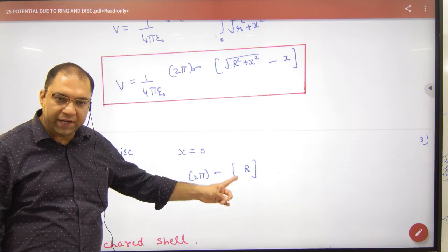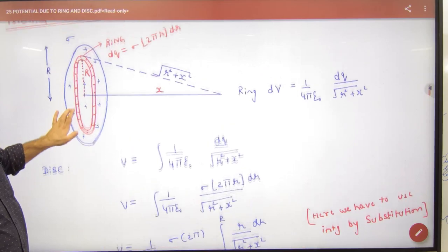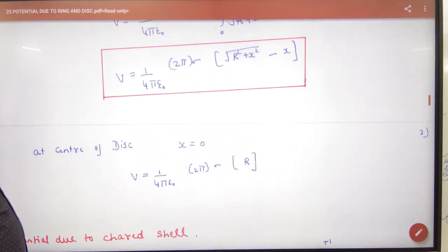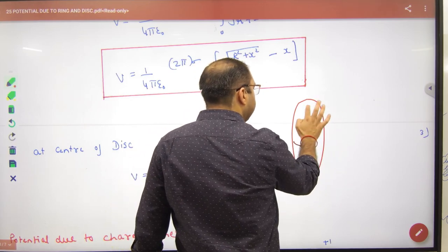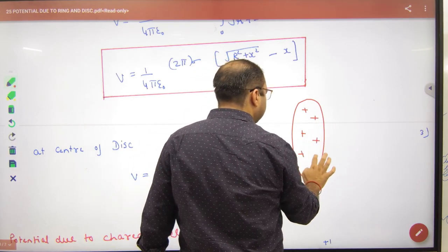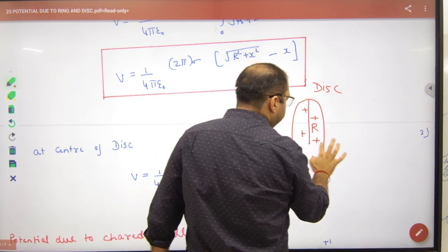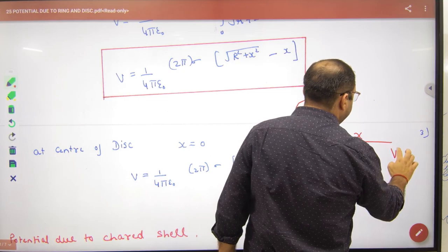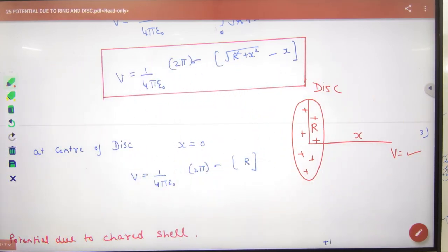For V at the center of the disc, draw a simple diagram in your formula register. Show the disc with radius capital R and distance x. This gives the value of V we calculated. Note: disc questions don't appear in NCERT.